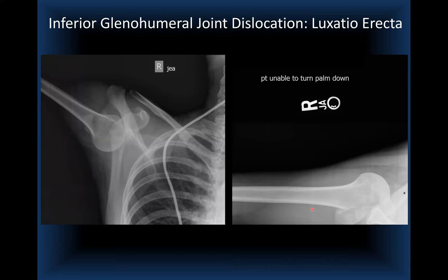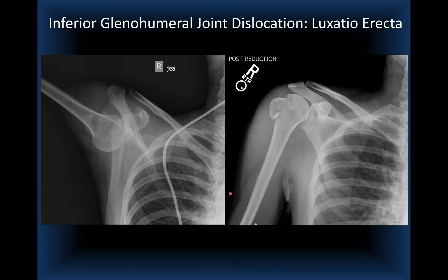In luxatio erecta, the humeral head is dislocated inferiorly with the axis of the humerus completely abducted relative to the scapular axis. The patient was unable to turn the palm down. These patients have an increased incidence of neurovascular injuries at the time of dislocation or with reduction, so proper reduction maneuver is critical. Luxatio erecta is also commonly associated with greater tuberosity fractures.